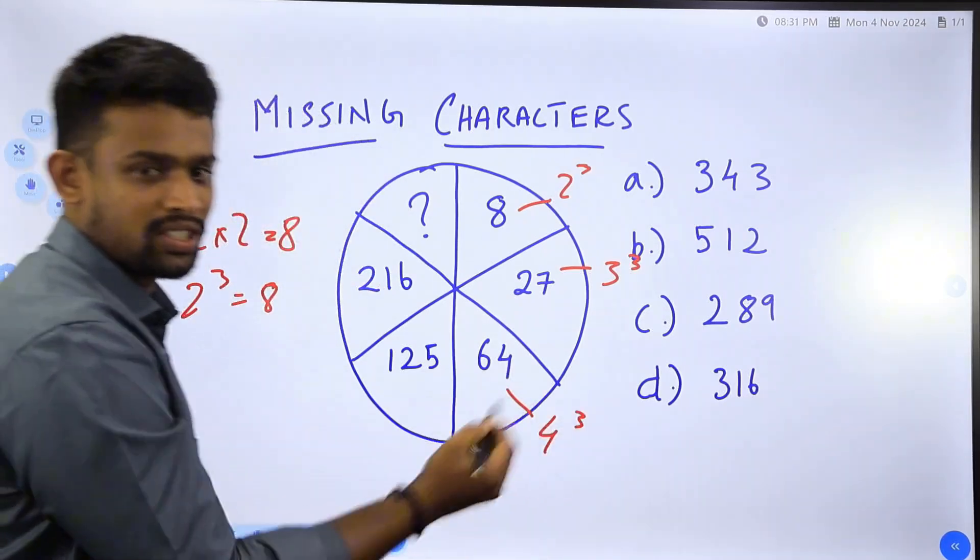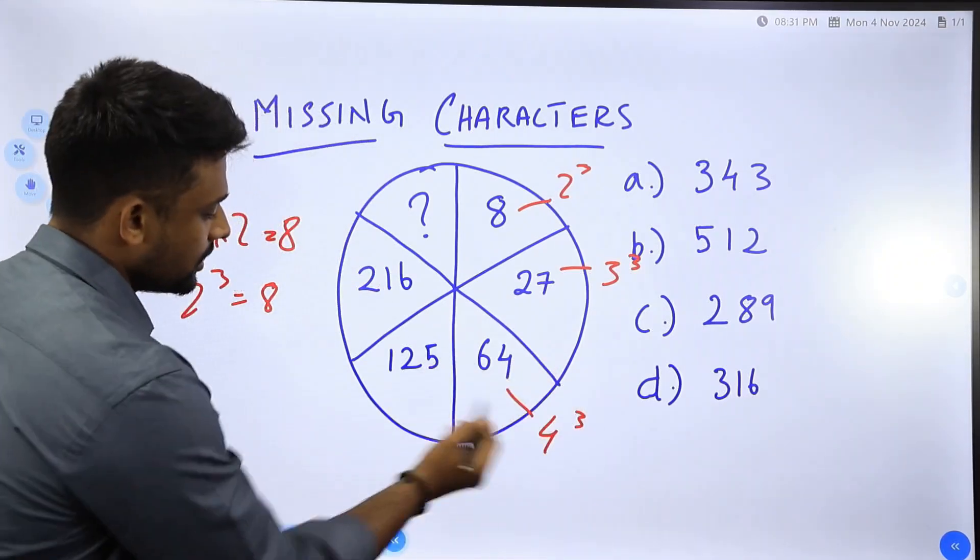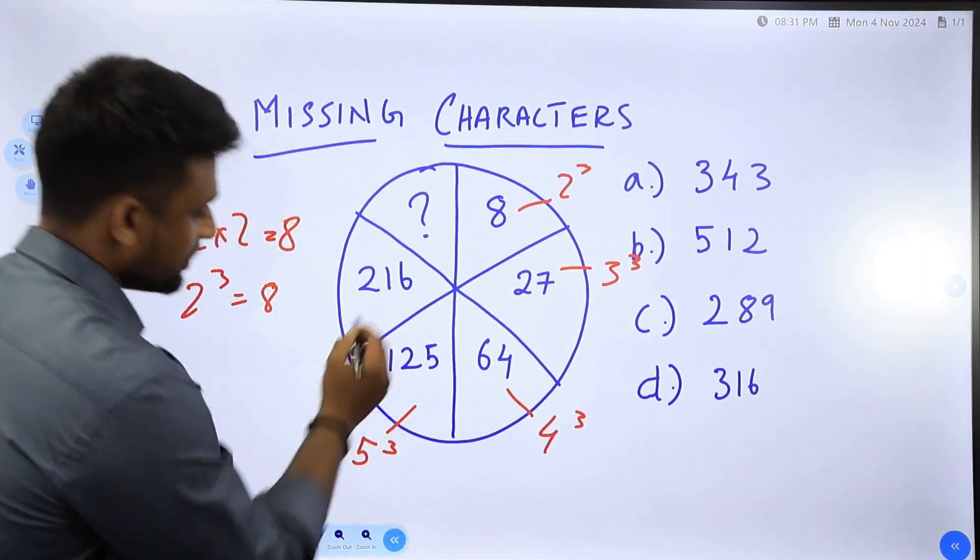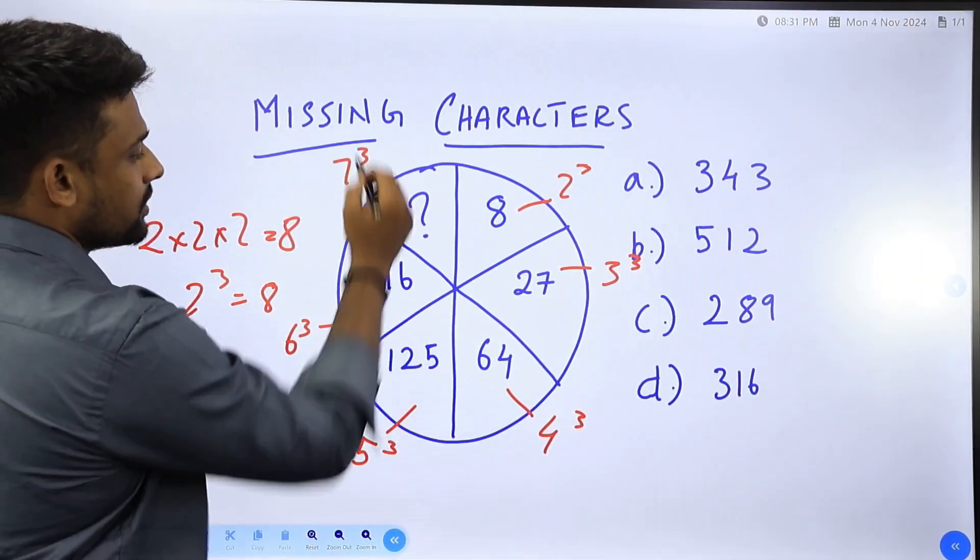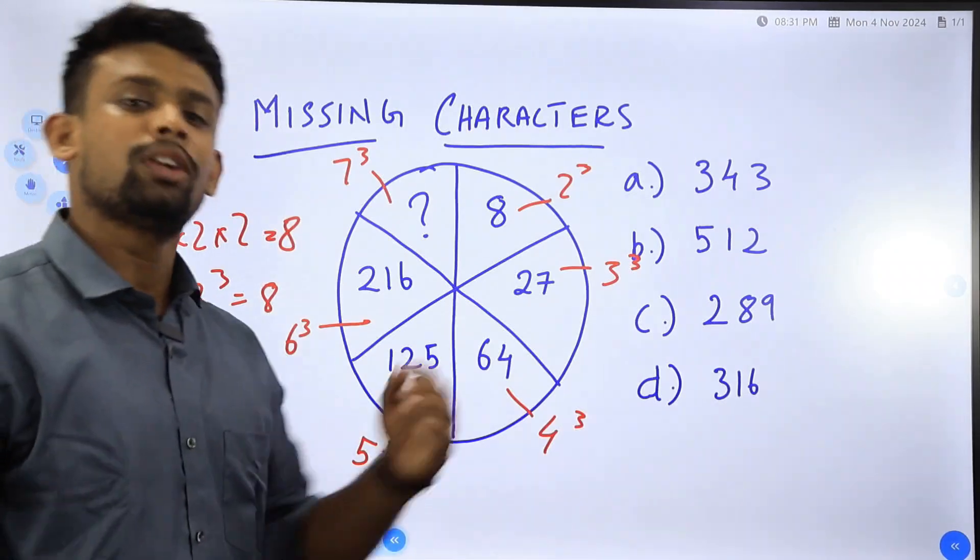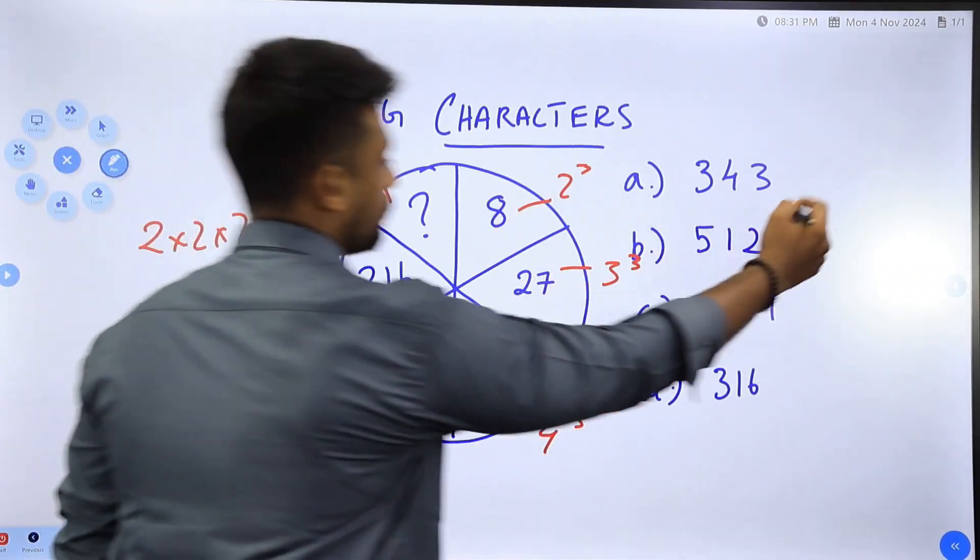4 into 4 into 4, 16 into 4 is 64. Then this is 5 cube, this is 6 cube, and this one should be 7 cube. 7 into 7 is 49, 49 into 7 is 343. That's our answer.